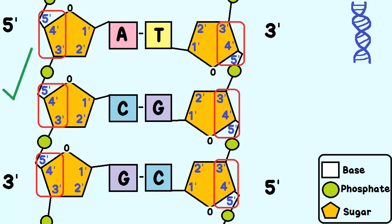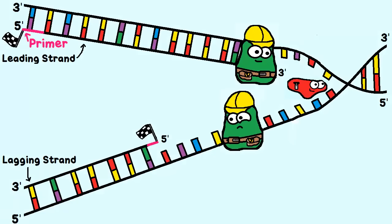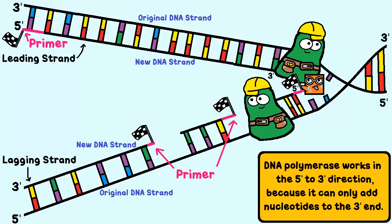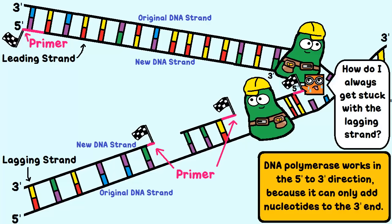So, the strand that runs 5' to 3' is fine — it's called the leading strand. But the other strand will make things a little tricky. DNA polymerase can only go in the 5' to 3' direction, so RNA primase has to set a lot of extra primers down to do that, as shown here. It takes longer, too. This strand is called the lagging strand, which is pretty fitting.